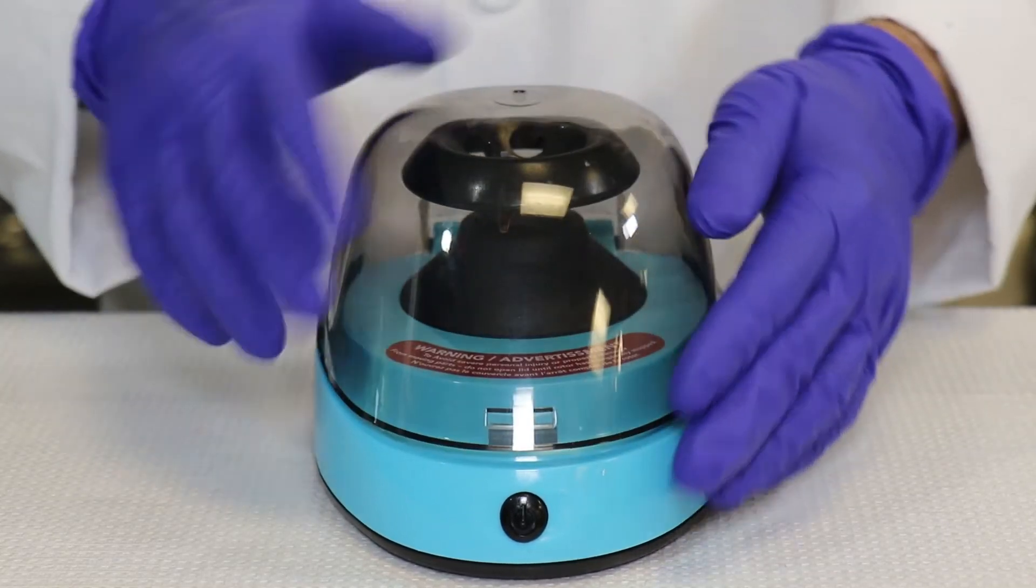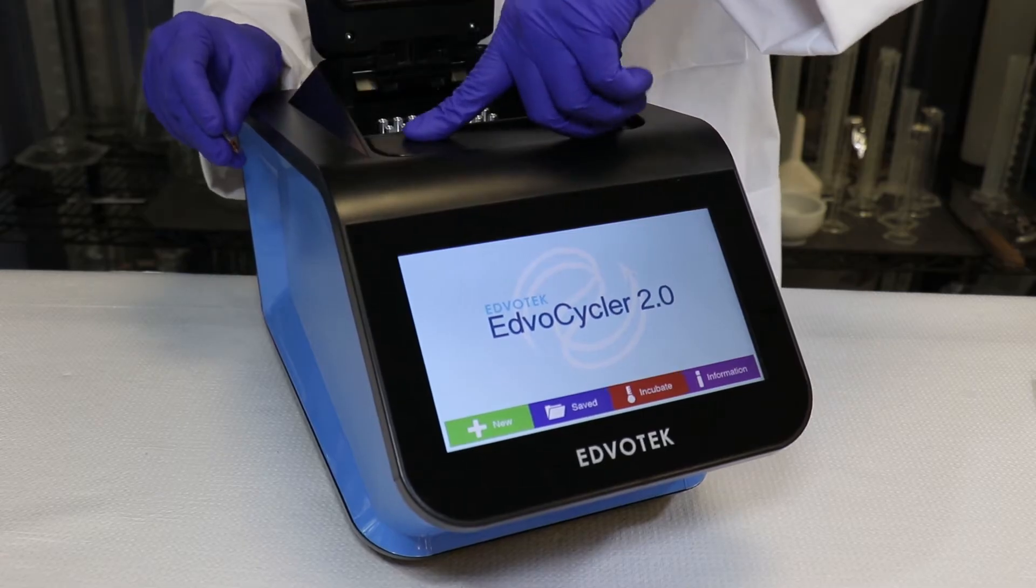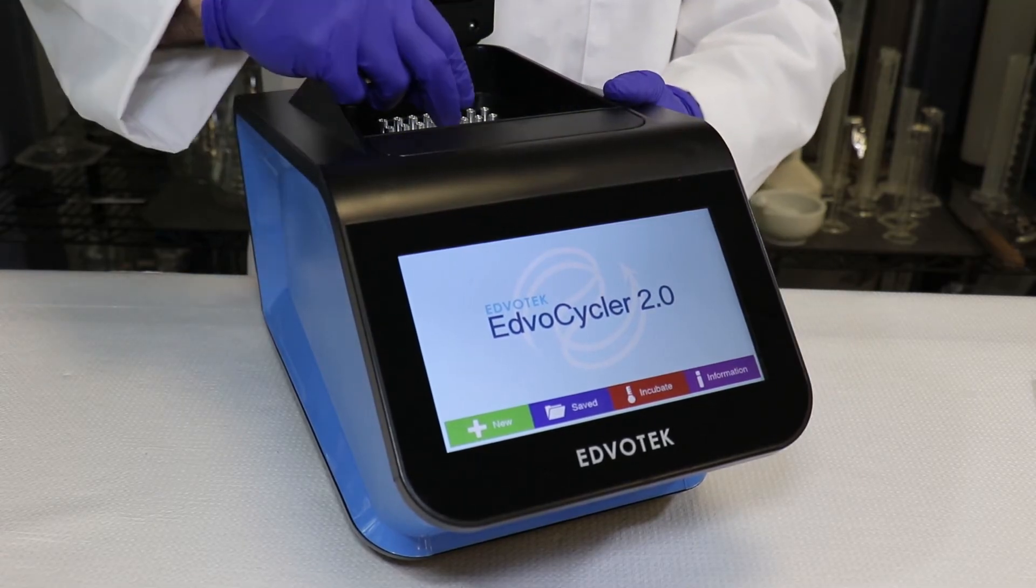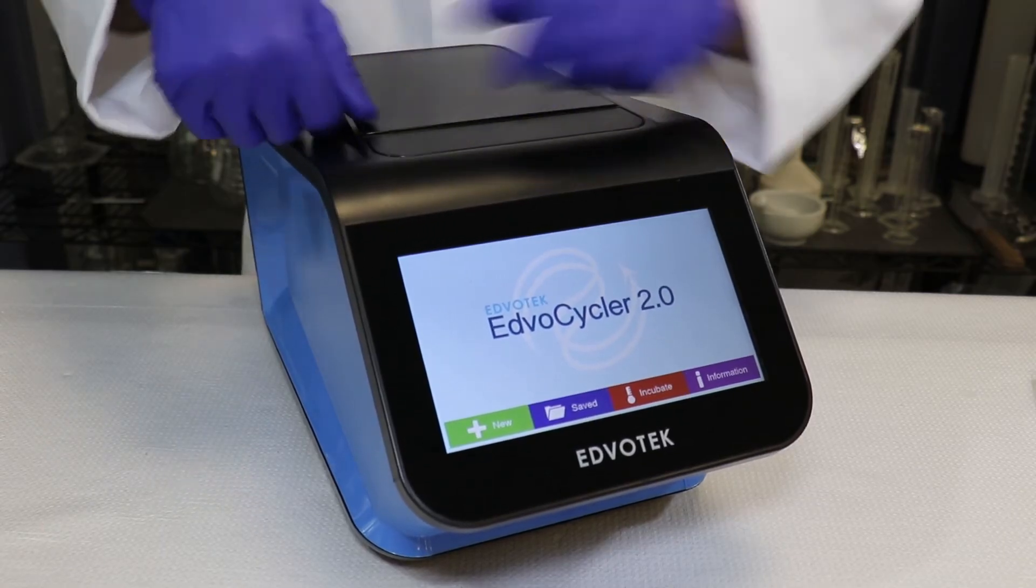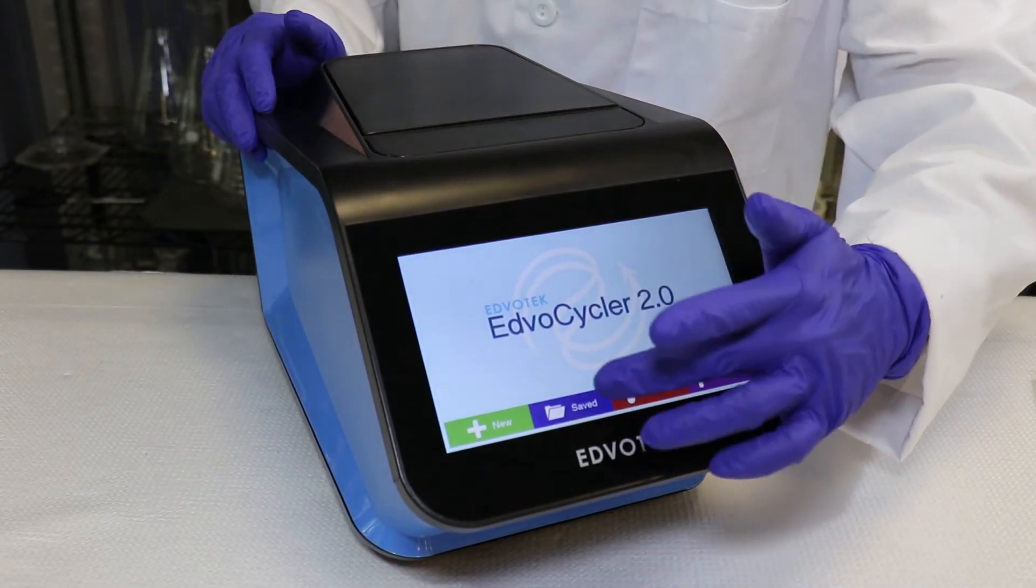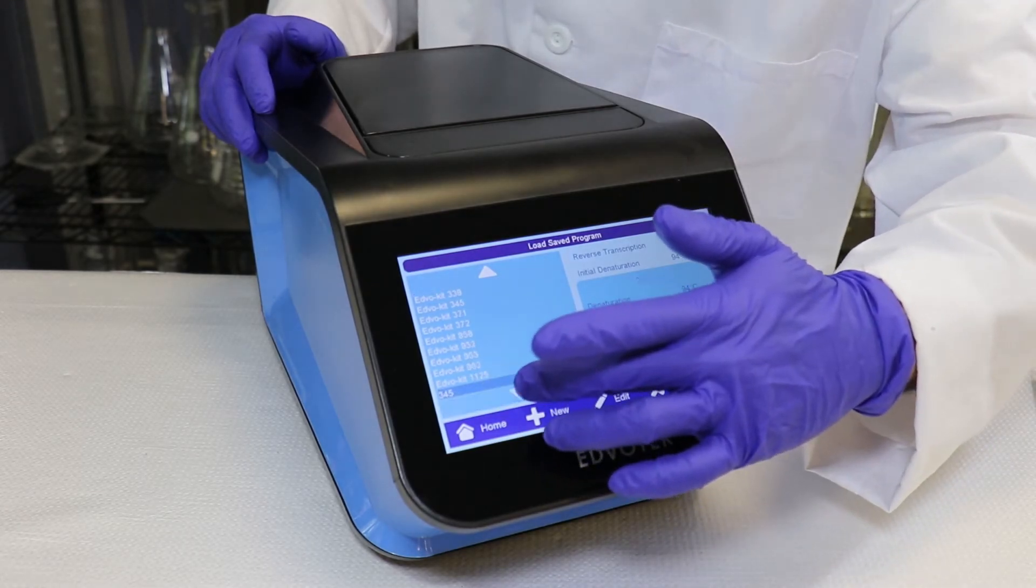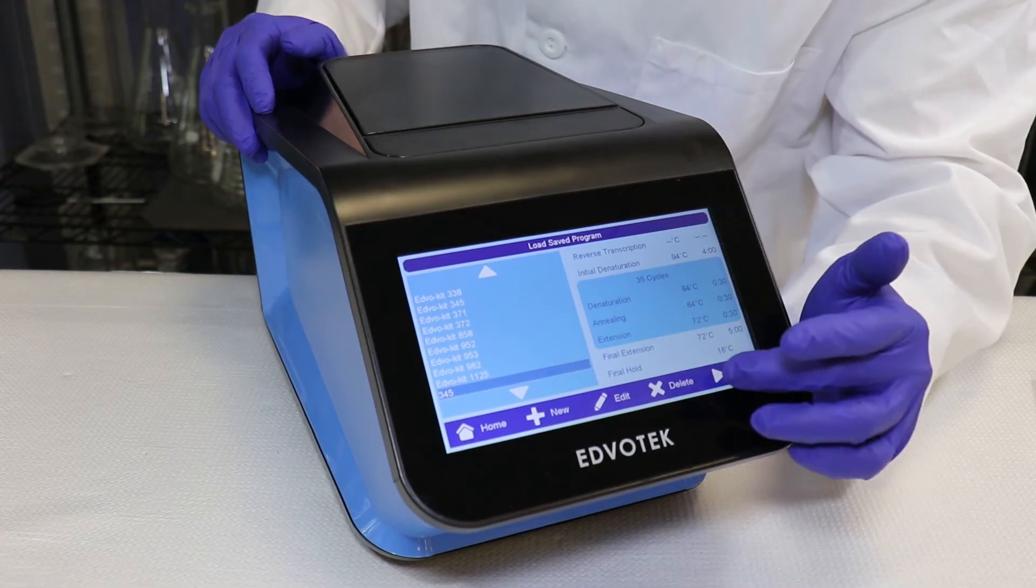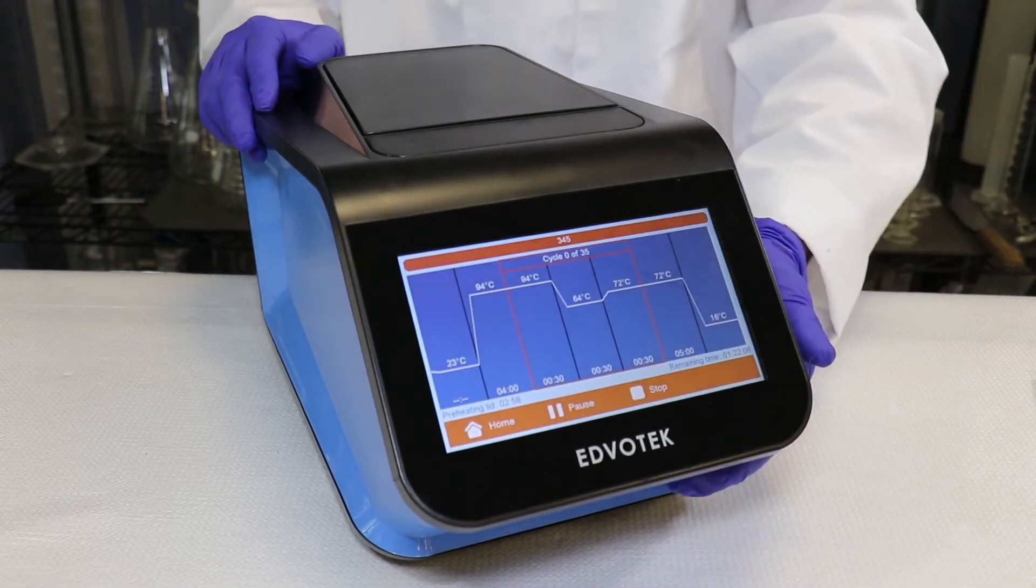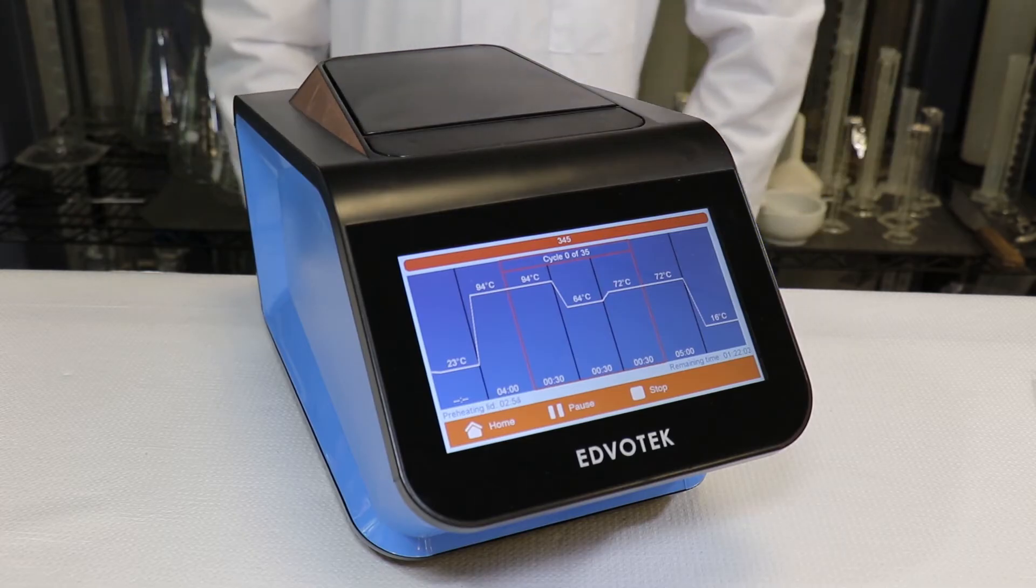Step 5: Centrifuge the tube for a few seconds to collect the sample at the bottom of the tube. Step 6: Amplify the DNA using the following PCR conditions: Initial DNA denaturation at 94 degrees Celsius for 4 minutes, 35 cycles at 94 degrees Celsius for 30 seconds, 65 degrees Celsius for 30 seconds, and 72 degrees Celsius for 30 seconds, with the final extension of 72 degrees Celsius for 5 minutes.